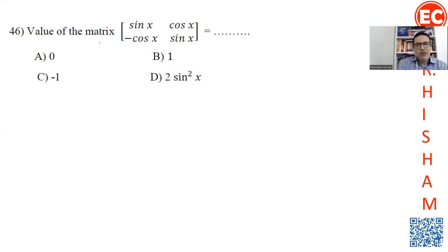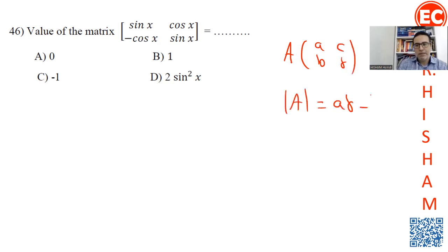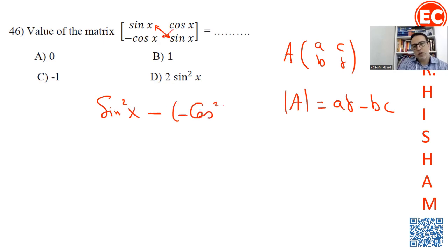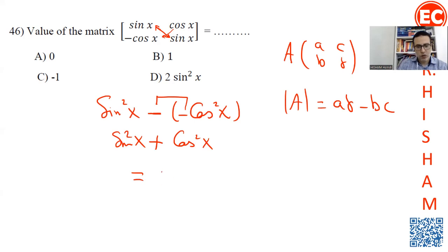Question 46: Find the determinant of the matrix with entries sine, sine, cosine, cosine. The determinant is ad minus bc: sine times sine minus cosine times cosine (with negatives). That gives sine squared x plus cosine squared x, which equals 1 by the Pythagorean identity.